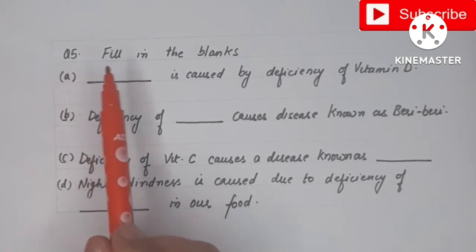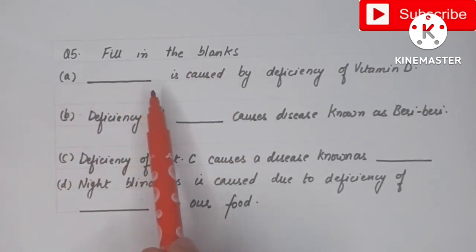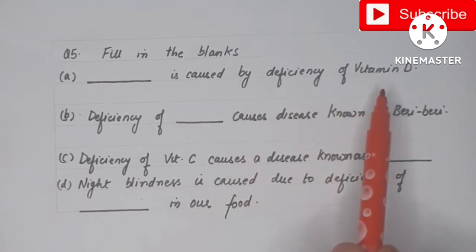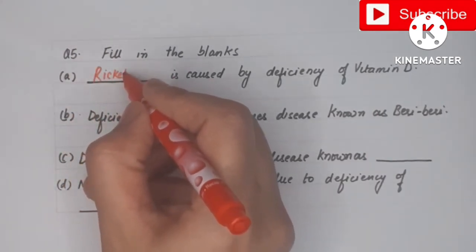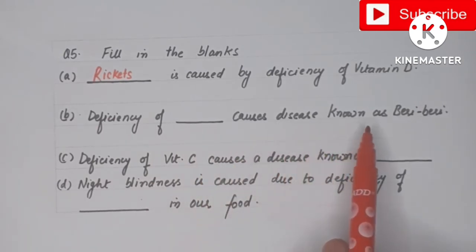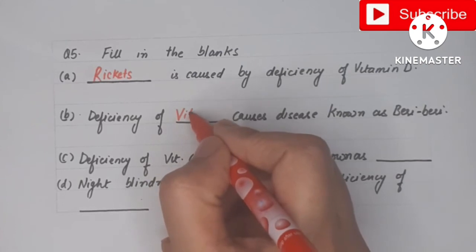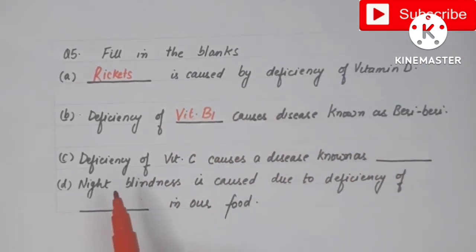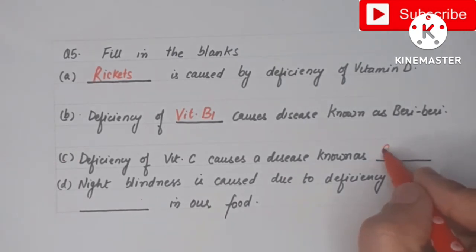Now question 5 is fill in the blanks. First: dash is caused by deficiency of vitamin D — the answer is rickets. Second: deficiency of dash causes the disease known as beri-beri — it occurs due to deficiency of vitamin B1. Third: deficiency of vitamin C causes the disease scurvy.